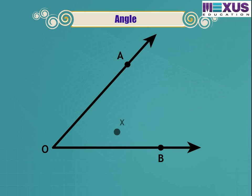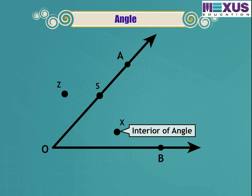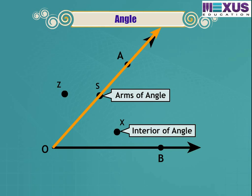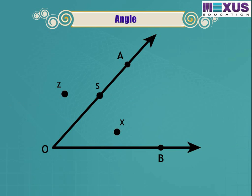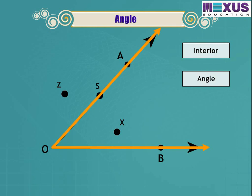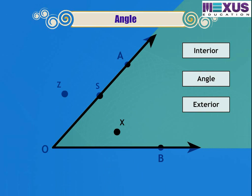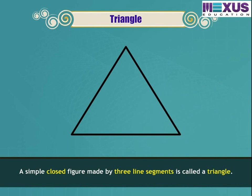Looking at points X, S, and Z: point X lies in the interior of angle AOB; S lies on the arms of angle AOB. If we extend rays OA and OB, we see that Z is not in the interior — it is in the exterior of angle AOB. Therefore, an angle divides a plane into three parts: the interior bounded by the two sides, the angle itself, and the exterior which is outside the angle.